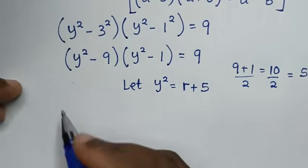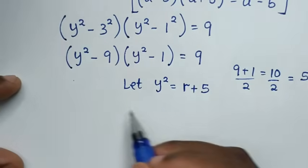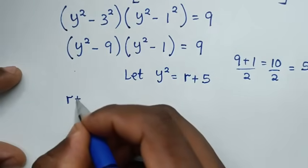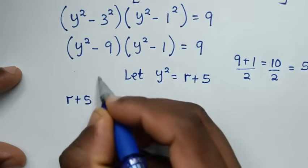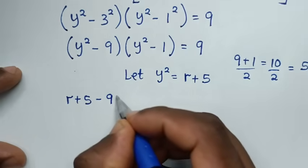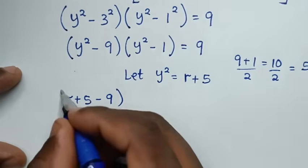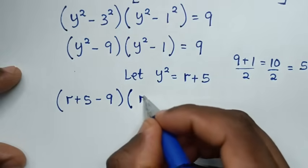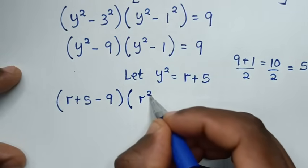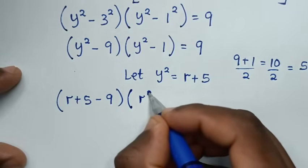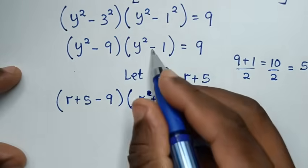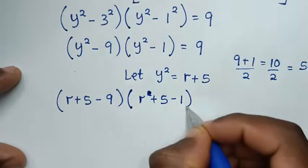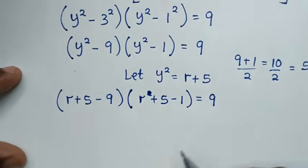Substituting y² = r+5 into (y²−9)(y²−1) = 9, we get (r+5−9)(r+5−1) = 9, which is (r−4)(r+4) = 9.